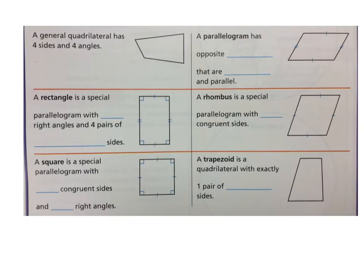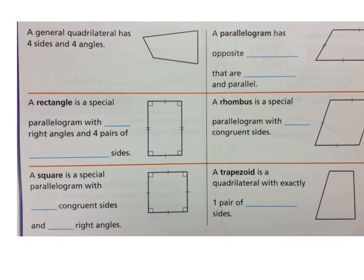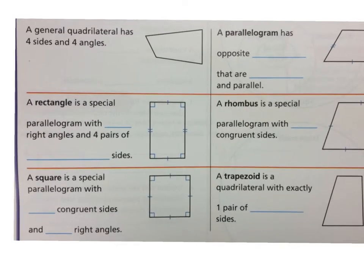Go ahead and draw yourself a little chart in your notebook. The first thing to note is that a general quadrilateral is any polygon that has four sides and four angles. You can see right here an example of what's called a general quadrilateral — just a plain old quadrilateral.